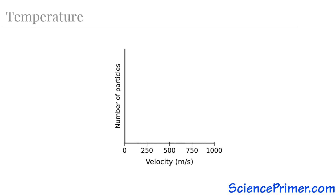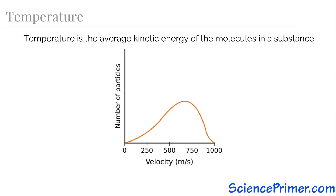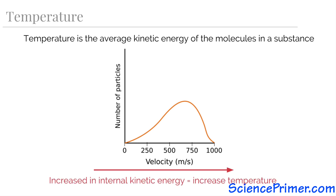The motion of the molecules is what we describe as temperature. We can even define temperature in terms of this motion: temperature is the average kinetic energy of the molecules in a substance. If we were to set up a chart showing velocity on the x-axis and the number of particles on the y-axis, a graph of the molecules of air in a room may show a few particles moving very slowly and a few moving very quickly, but the bulk of them moving at about 500 meters per second. If we were to increase the kinetic energy of the molecules, the whole graph would shift to the right, and this increase in the internal kinetic energy results in an increase in temperature.